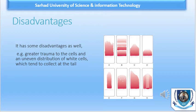The wedge or slide technique also has some disadvantages that students of hematology must know. First, whenever we are making a peripheral smear on a glass slide, there is a chance of greater trauma to the cells. Second, there is uneven distribution of white blood cells, which tend to collect at the tail. Despite these disadvantages, we still perform all peripheral morphology — WBCs, RBCs, and platelet disorders — through peripheral smear on glass slides.